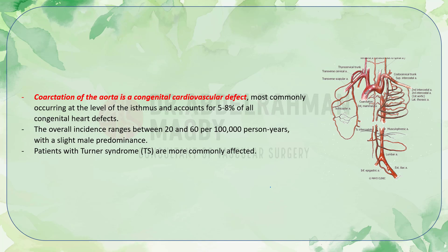Coarctation of the aorta is a congenital cardiovascular defect most commonly occurring at the level of the isthmus — the region between the left subclavian artery and the ductus arteriosus. The overall incidence ranges between 20 and 60 per 100,000 person-years with a slight male predominance. Patients with Turner syndrome are more commonly affected, as Turner syndrome is a genetic condition.